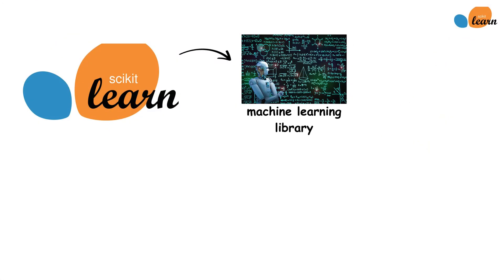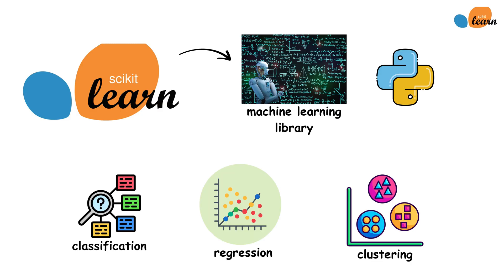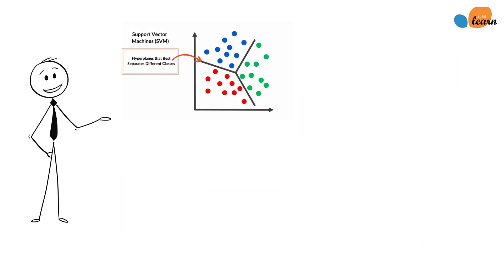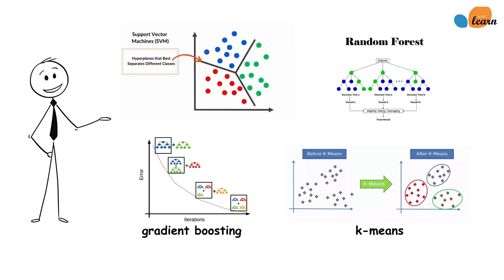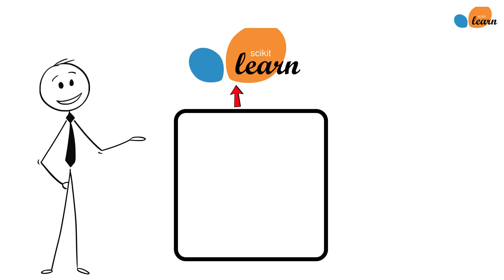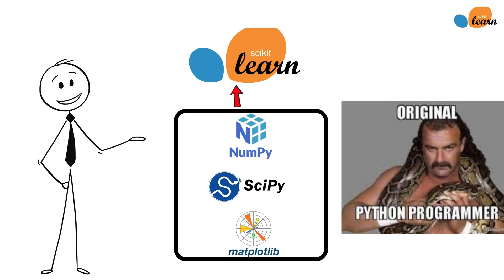Scikit-learn is a free software machine learning library for Python that features various classification, regression, and clustering algorithms including support vector machines, random forests, gradient boosting, and k-means. Scikit-learn is built on NumPy, SciPy, and Matplotlib, making it accessible to anyone familiar with Python's scientific computing ecosystem.